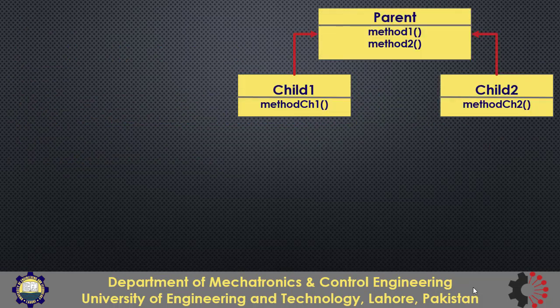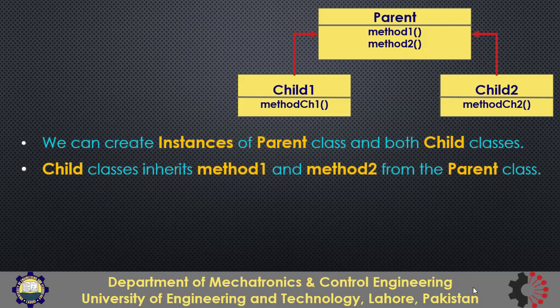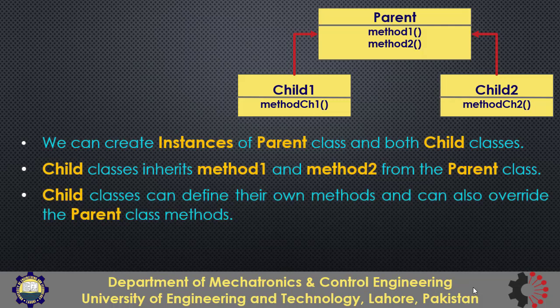Let's see this UML diagram where there is one parent class with two methods defined in it, and it has two child classes: child1 and child2. We know from class inheritance that we can create instances of the parent class or any of the child classes. Child classes inherit method1 and method2 from the parent class, and they can define their own methods and can also override the methods of the parent class.